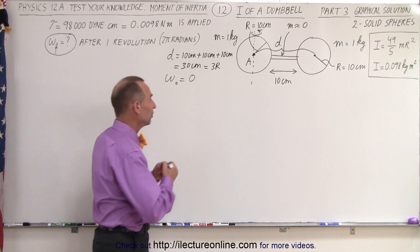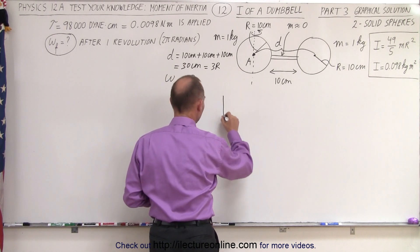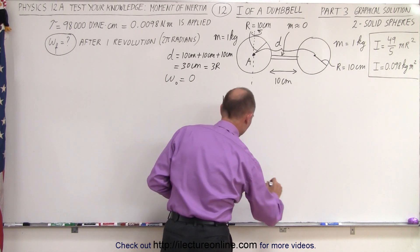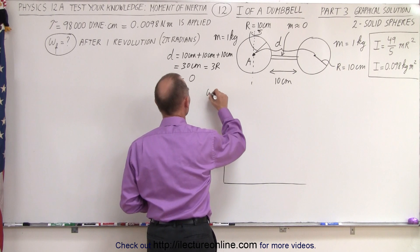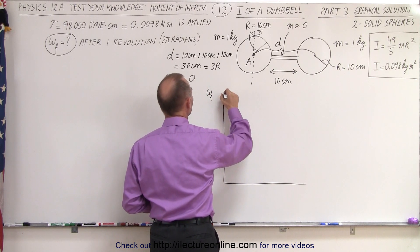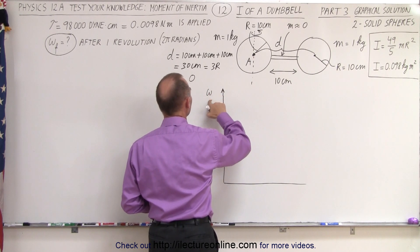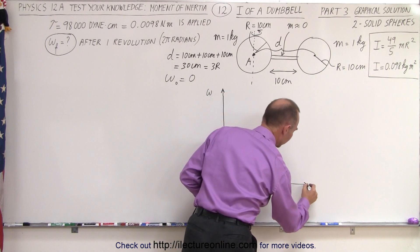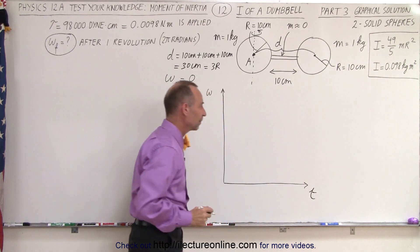So what we're going to do is start off with an omega versus t graph, an angular velocity versus time graph. On the vertical axis, we get omega, and on the horizontal axis, we get time.